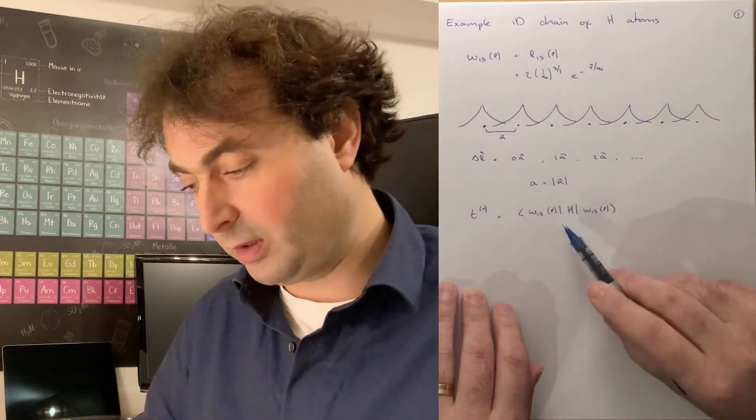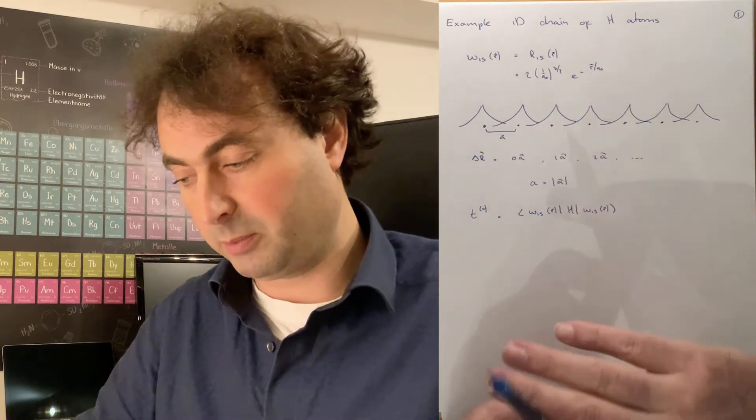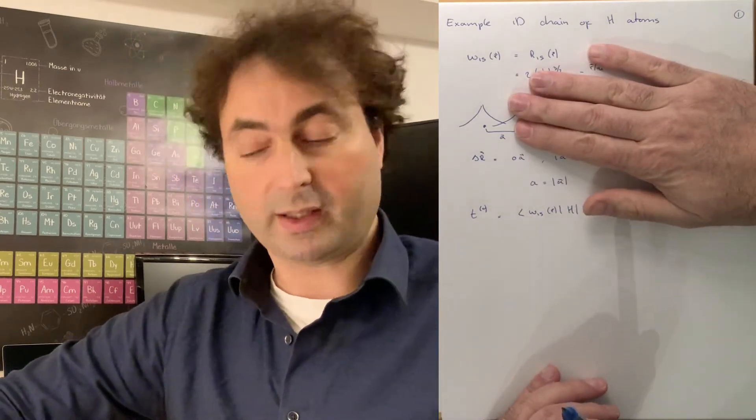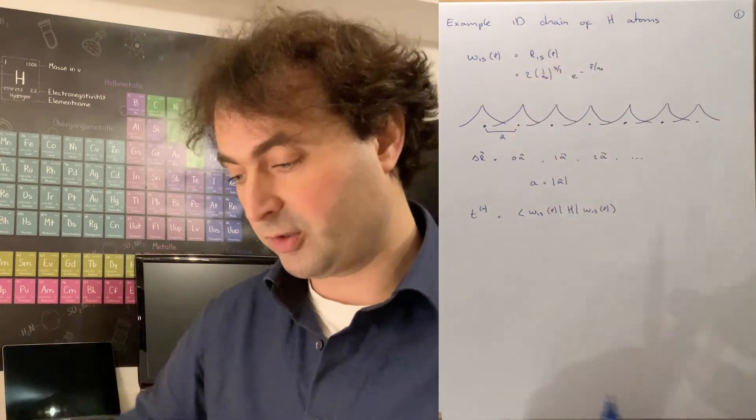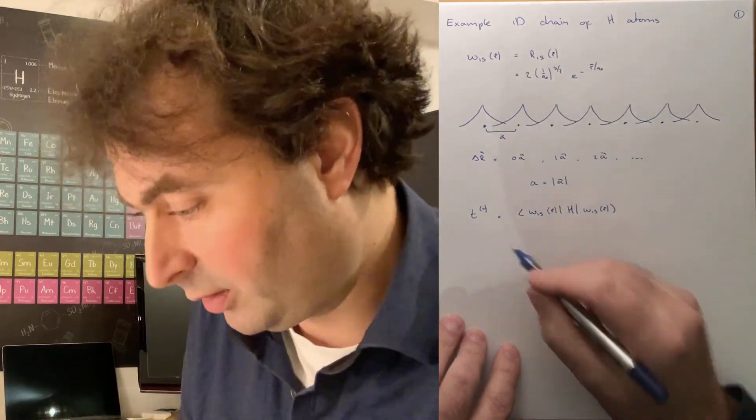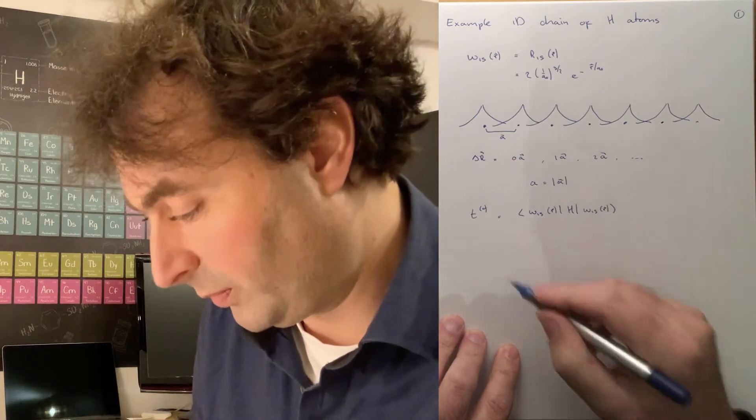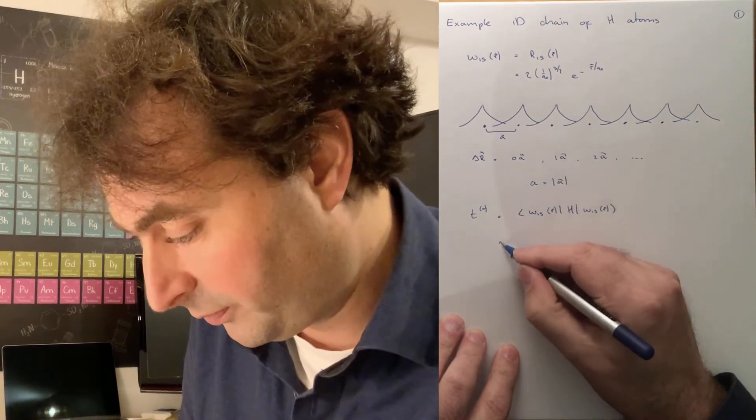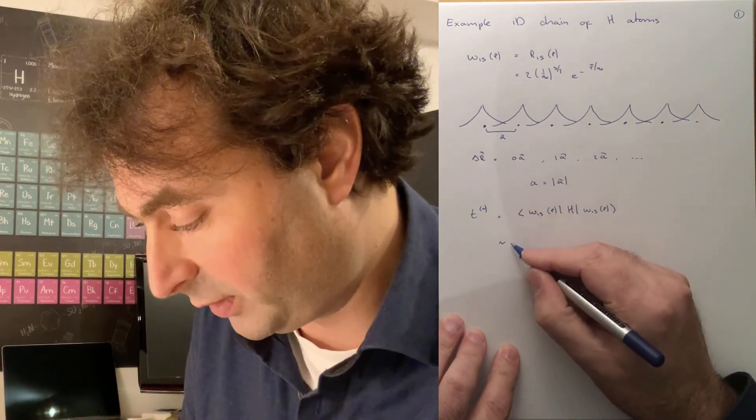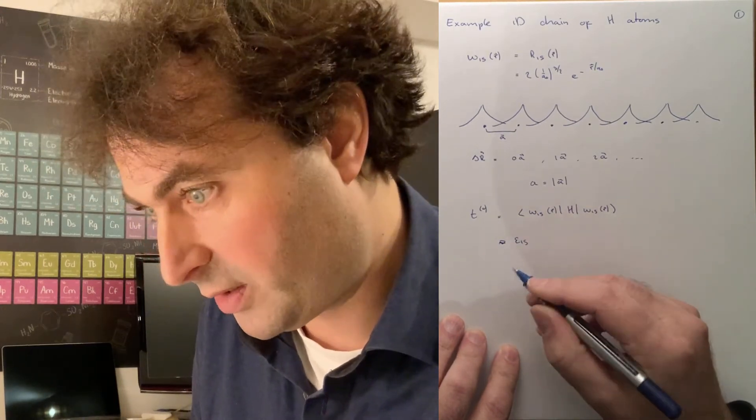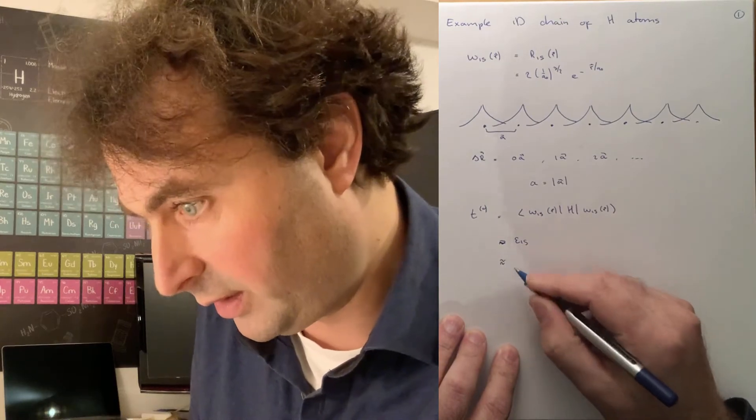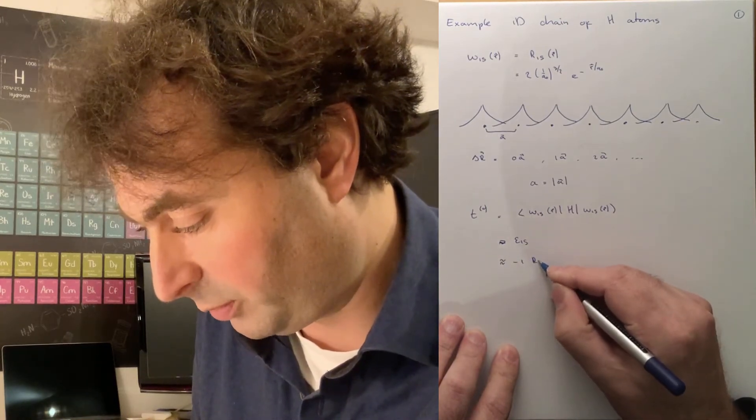Well, if the Hamiltonian would be the Hamiltonian of a single hydrogen atom, then what we have here is just the binding energy for that atom. Now we have, of course, also the other nuclei in there. But this should be roughly 1 Rydberg. So this is what we call the epsilon 1s, the on-site energy. And this is roughly minus 1 Rydberg.